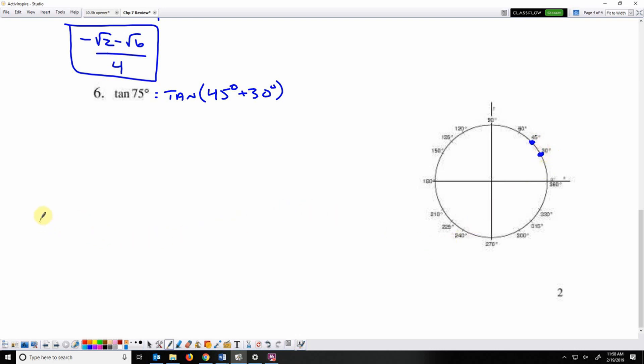The identity for tangent says we do tangent of 45, plus or minus, which means keep this sign, plus tangent 30, over 1 minus or plus, which means change this sign.